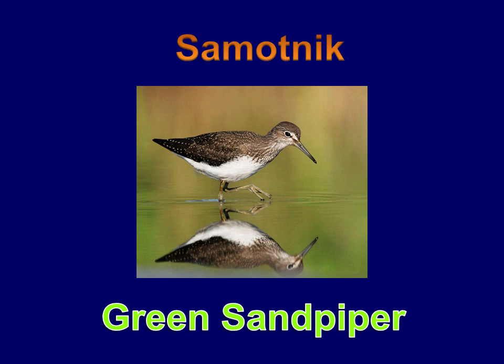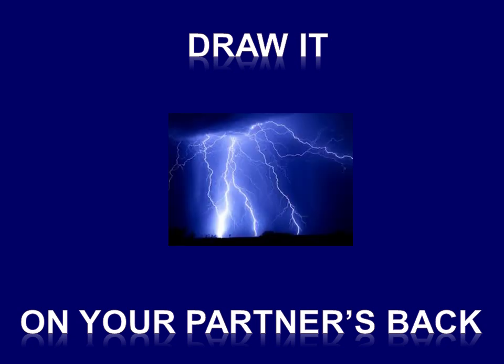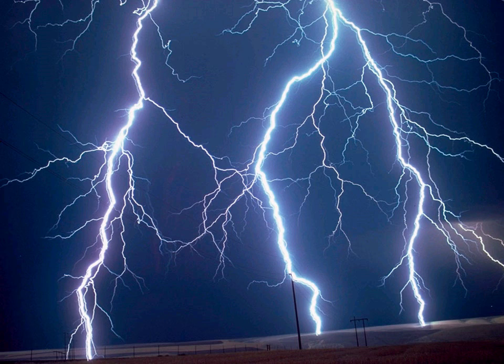Now let's try another sense. Have a look at the screen. What you have to do is to draw something on your partner's back. Listen to the sound and draw it on your partner's back. What was it? Storm. Thunder — you were right. And now for those of you who love beautiful pictures, have a look at this. Let's summarize: which senses have we involved? Hearing, sight, and the sense of touch.